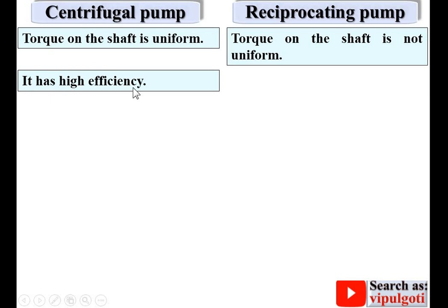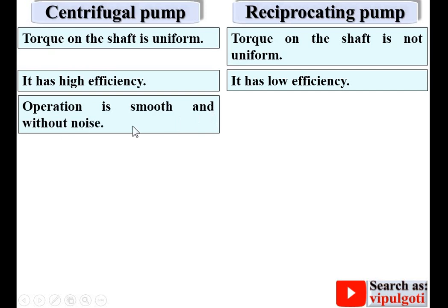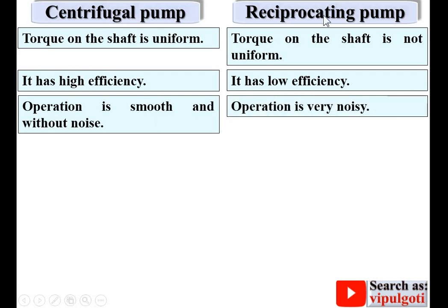Centrifugal pump has high efficiency while reciprocating pump has low efficiency. Operation of the centrifugal pump is smooth and without noise because there is no major sliding motion. Whereas in the reciprocating pump, operation is very noisy because of the sliding motion between the piston and cylinder.